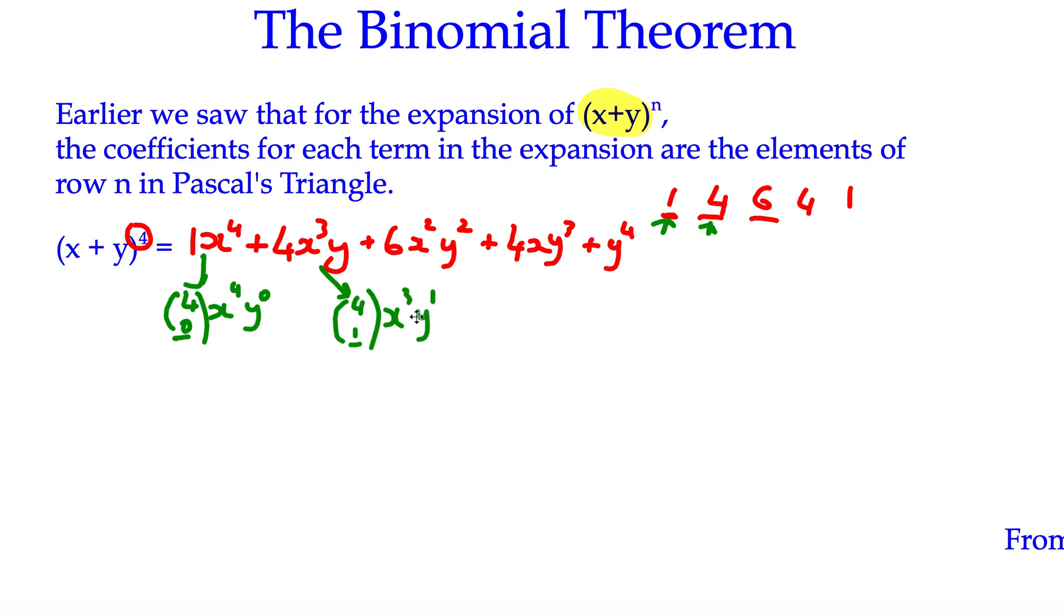Now notice again that this value here, the 1 on the bottom, corresponds to the value of y, and to get the x one the connection is that it's 4 minus that value of 1. The same can happen all along. The next one, the 6 is actually 4 choose 2. Notice that the x power is 4 subtract 2 which is 2, and the y power is the 2 itself.